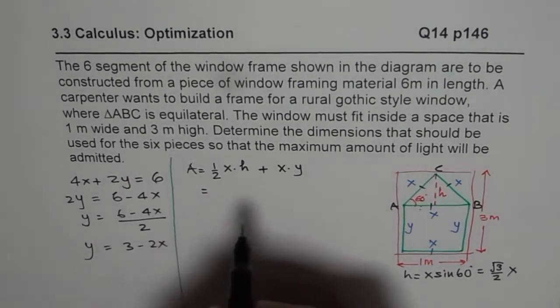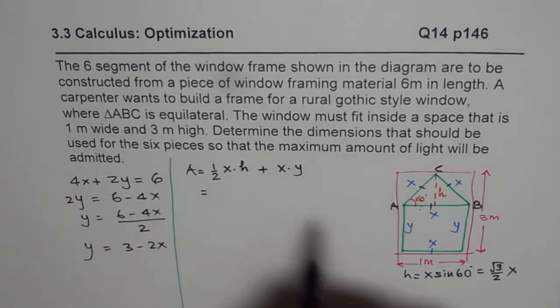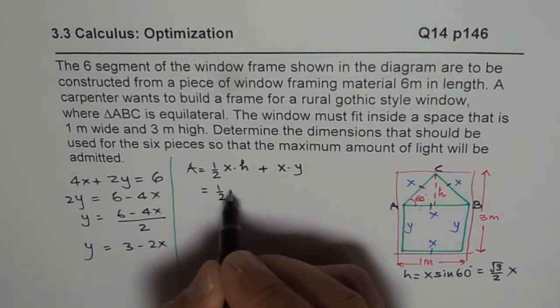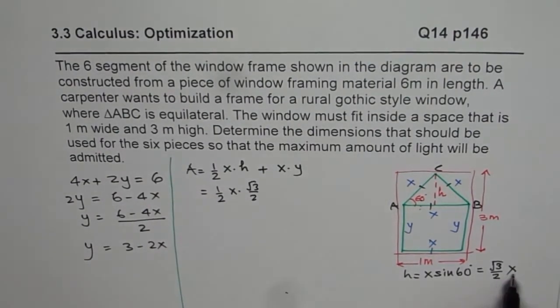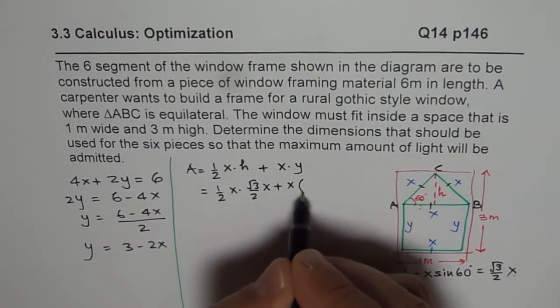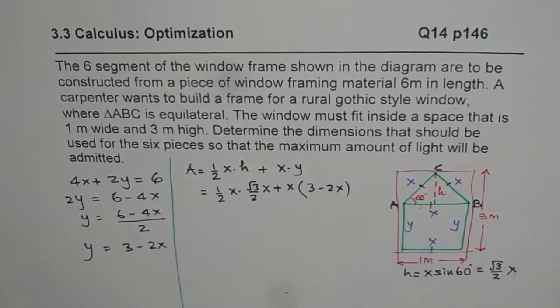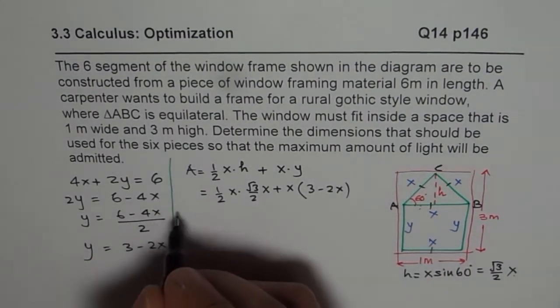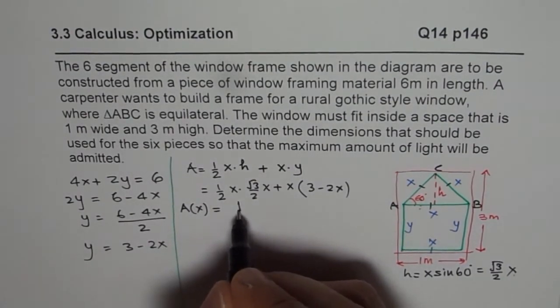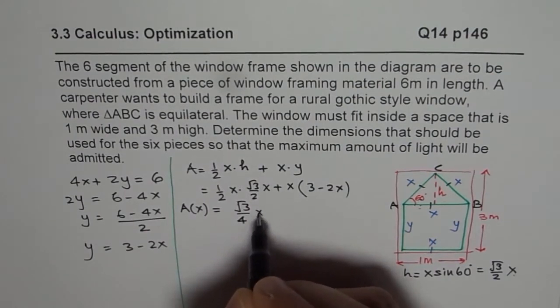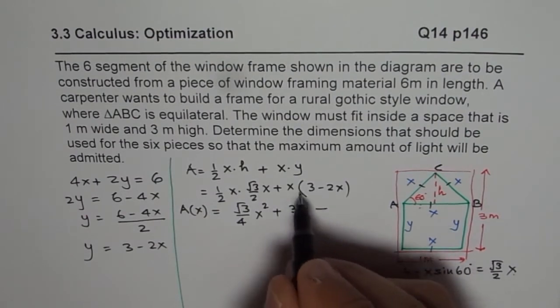So let's substitute this value. We get area as half times x times square root 3 over 2x, plus x times y is 3 minus 2x. So now we have everything in terms of x and we can say area as a function of x is square root 3 over 4x square, plus 3x minus 2x square.